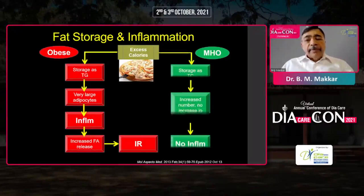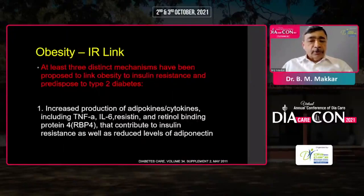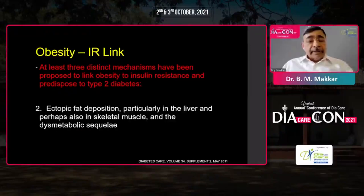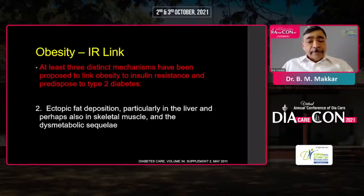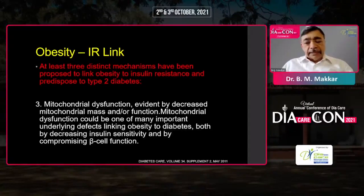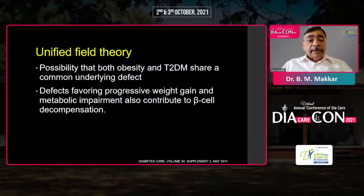However, some patients will remain healthy despite excess fat if they are able to increase the number of cells without causing inflammation of the adipose tissue. Three distinct mechanisms have been proposed to link obesity to insulin resistance and development of type 2 diabetes: one is increased production of inflammatory adipokines; there is ectopic deposition of fat particularly in the liver, skeletal muscle, and pancreas, which leads to both insulin resistance and beta cell dysfunction; and third is mitochondrial dysfunction, which leads to increased oxidative stress, stimulating pathways of insulin resistance and beta cell dysfunction, and also activating pathways of diabetes complications.